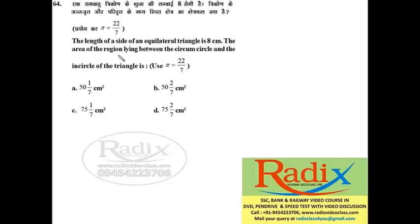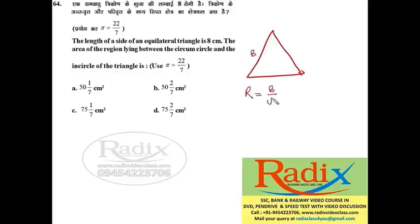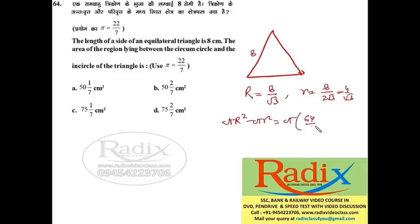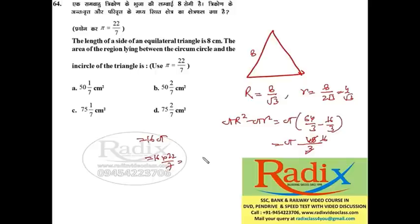Question 64: The length of side of an equilateral triangle is 8 cm. Find the area between the circumcircle and incircle. Circumradius R = 8/√3; inradius r = 4/√3. Area = π(R² − r²) = π(64/3 − 16/3) = π·48/3 = 16π = 16·22/7 = 352/7 ≈ 50 2/7. Answer is option B.